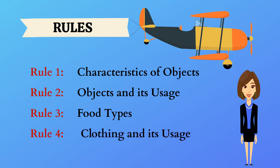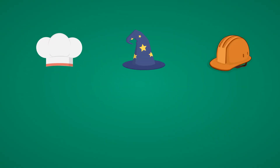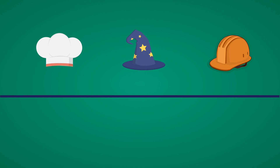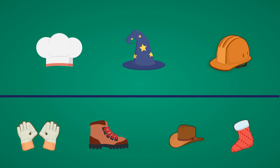Rule four: clothing and its usage. In the top row we have a chef's hat, a wizard's hat, and a safety helmet. These are clothing accessories worn on the head. In the answer choices we have a glove, a shoe, a hat, and a sock. A hat is the clothing accessory worn on the head — hence hat is the answer.